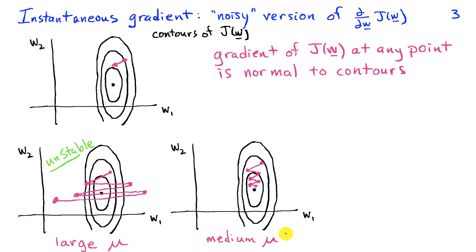Now, if I choose mu somewhat smaller than that, where I end up not going up the side of the bowl from where I started, then I can zigzag in here toward the optimum, because I'm always taking, when I'm on this side, the gradient points me to the right and down slightly, and then I'm here and the gradient points me more toward the center.